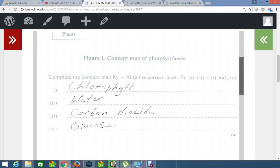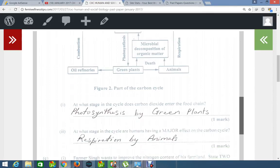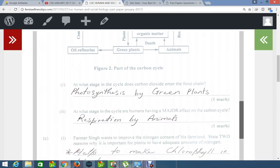Figure 2 shows part of the carbon cycle. Now, at what stage in the cycle does carbon dioxide enter the food chain? As you can see, my possible answer is photosynthesis by green plants. So that is how it first enters the food chain. In that process, of course, green plants will use it in the manufacturing of nutrients such as glucose.